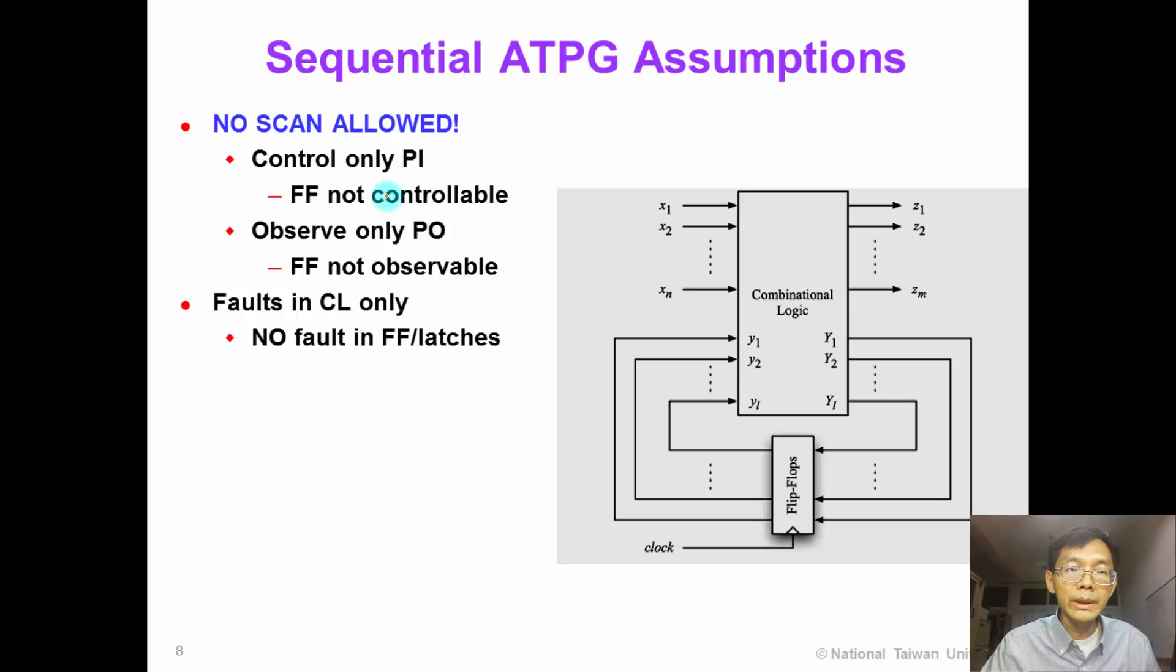In sequential ATPG, we assume that there is no scan allowed, which means that we can only control the primary inputs. We are not allowed to control the flip-flop state. We can only observe the primary outputs. We are not allowed to observe any flip-flop state.